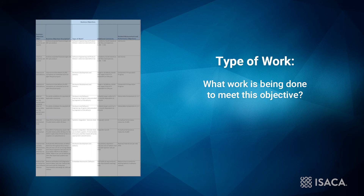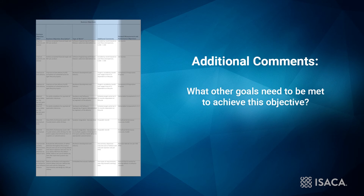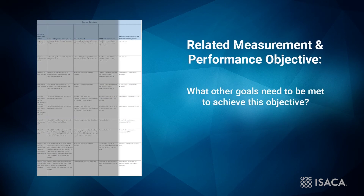Having poorly defined objectives at this stage may indicate problems later. The third column is called type of work and relates to the work being done within the organization to which this objective applies. If different types of work are being done, the details would be spelled out here. The type of work is useful when accumulated over multiple appraisals, as grouping data related to similar types of work can be a helpful way to portray the bigger picture. The fourth column is called additional comments and is where the intention of the objective is explained, including the priority of the objective and history of how the objective has developed. The fifth and final column is called related measurement and performance objective.